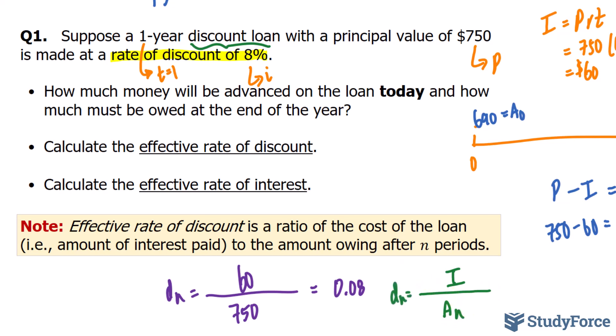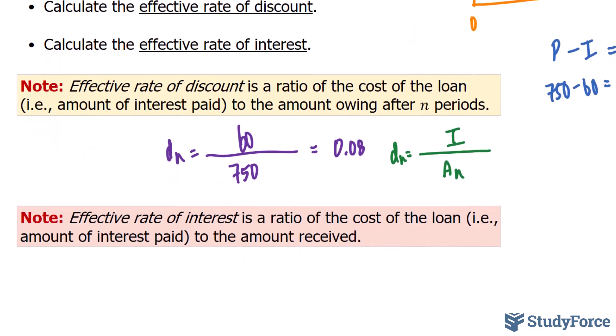And the last part of this question is, calculate the effective rate of interest. Now, the effective rate of interest is also a ratio. We'll actually denote it as lowercase i sub N. The effective rate of interest is the ratio of the cost of the loan, that is, the amount of interest paid, to the amount received.